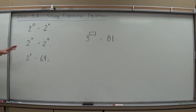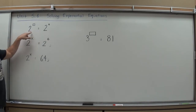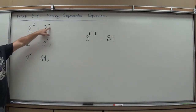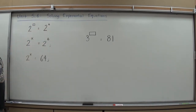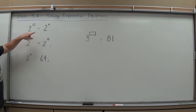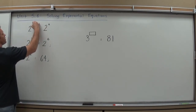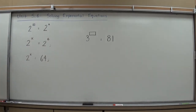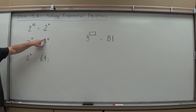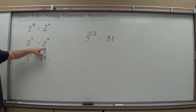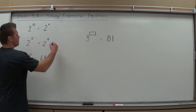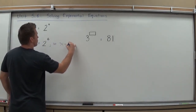To help you understand that concept, I'm going to start with this first situation: 2 to the box equals 2 to the 6. The bases are the same, so I just need the exponents to be the same. Logically, if I said 2 to the x equals 2 to the 6, the base is the same, so the exponents must be the same — therefore x must equal 6.